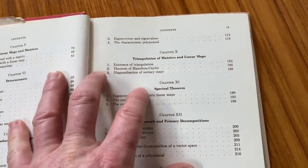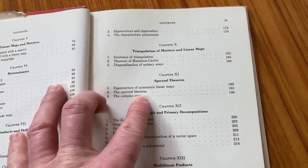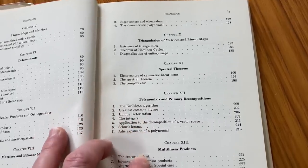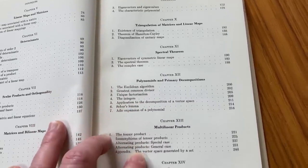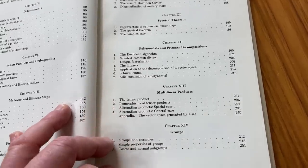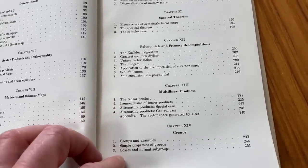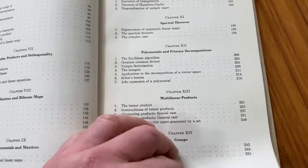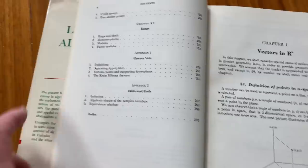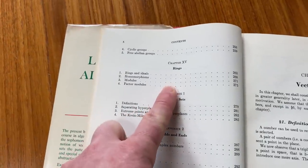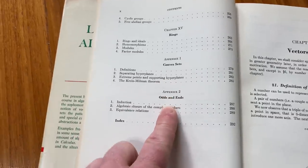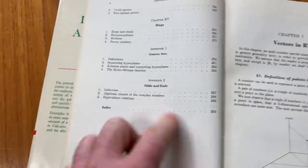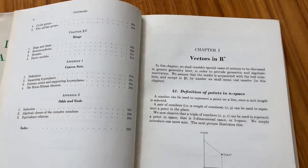Triangulation of matrices and linear maps, spectral theorem, polynomials and primary decompositions, multilinear products. And then it talks about groups, which is really cool. You could just open this up and go straight to page 242 and try to read it. You could learn a little bit of group theory. Rings. It's pretty amazing. Convex sets, and then some odds and ends. You gotta love Serge Lang. What a great author.